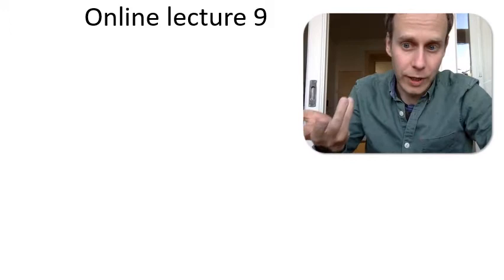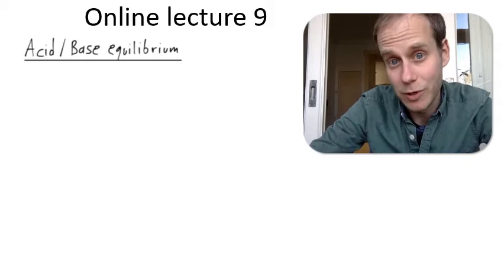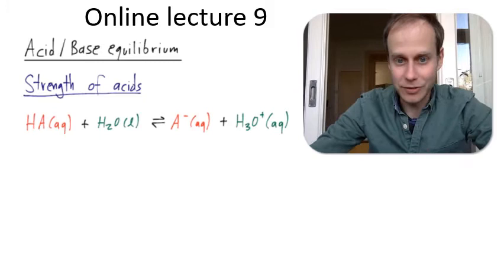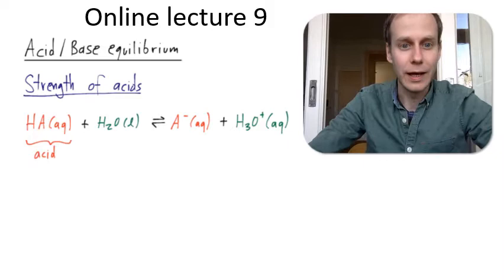Today I will talk about the acid-base equilibrium as the next example of equilibrium chemistry. First I'd like to talk about the strength of acids. Here's the reaction equation for the dissociation of an acid. This is our acid — it has a hydrogen attached to the acid molecule, and there is also always a base. In this example, the base is simply water.